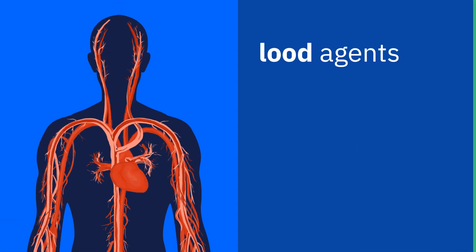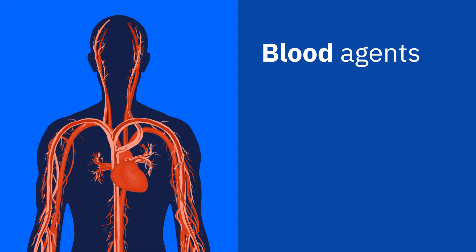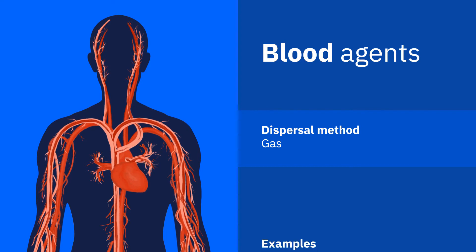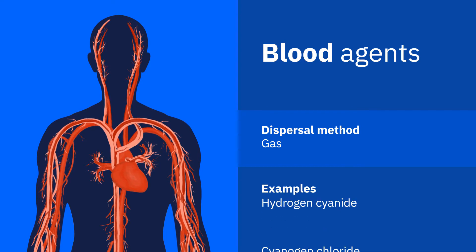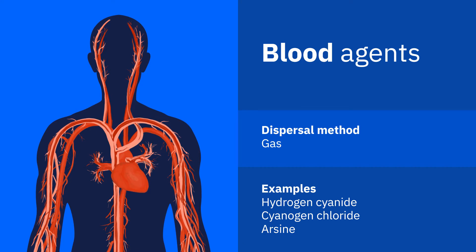Blood agents inhibit the ability of cells to use oxygen, effectively causing the body to suffocate. They generally enter the body through inhalation and are distributed via the blood.